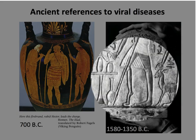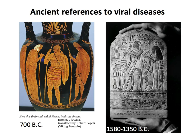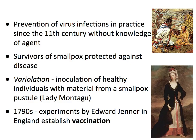Here is an Egyptian stele from 1500 B.C. This individual's leg looks like he's got polio. We can't say if it is or not, of course, but this is a perfect presentation of polio. In the 11th century, the Chinese were immunizing against smallpox. They didn't know that it was a virus, but they knew that people who survived smallpox were protected. So they took one of these pustules and infected people with that, and they'd be protected. That actually worked. It's called variolation.